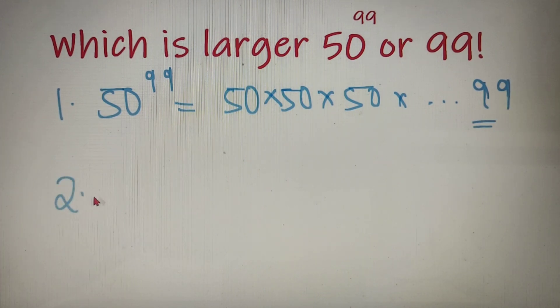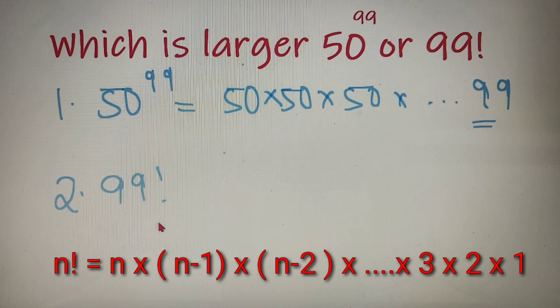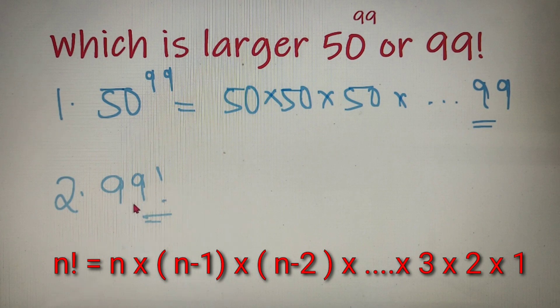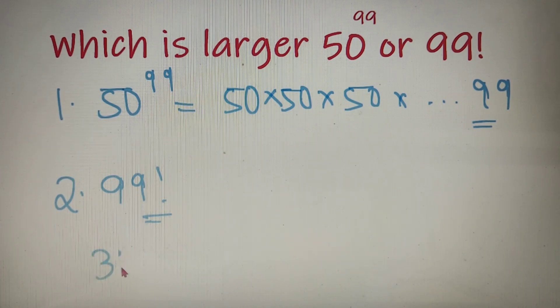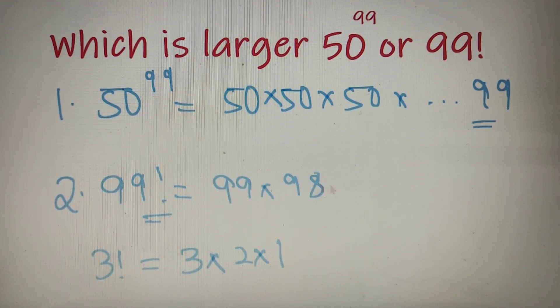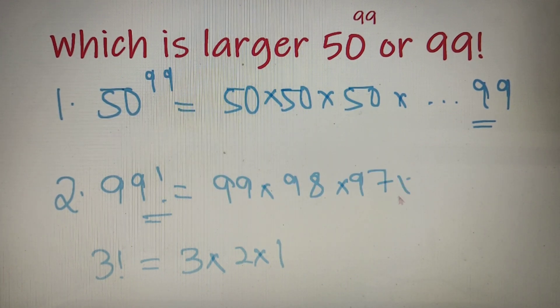Now the second number that is given to us is 99 factorial. Now for all those who don't know what is a factorial, factorial of a number is nothing but the product of all the numbers from that number to the number 1. So suppose we are given 3 factorial, then 3 factorial is equal to 3 into 2 into 1. So just like that, 99 factorial is equal to 99 into 98 into 97 into all the numbers up to the number 1.